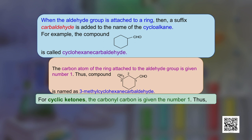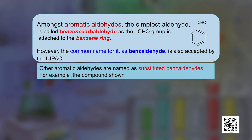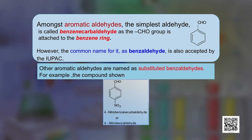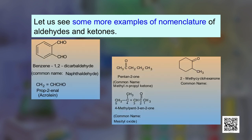For cyclic ketones, the carbonyl carbon is given the number 1, as shown in the structure here. Among aromatic aldehydes, the simplest aldehyde — with a CHO group attached to the benzene ring — is called benzenecarbaldehyde. However, the common name benzaldehyde is also accepted by the IUPAC system. Other aromatic aldehydes are named as substituted benzaldehydes; for example, the compound shown here is a derivative of benzaldehyde.